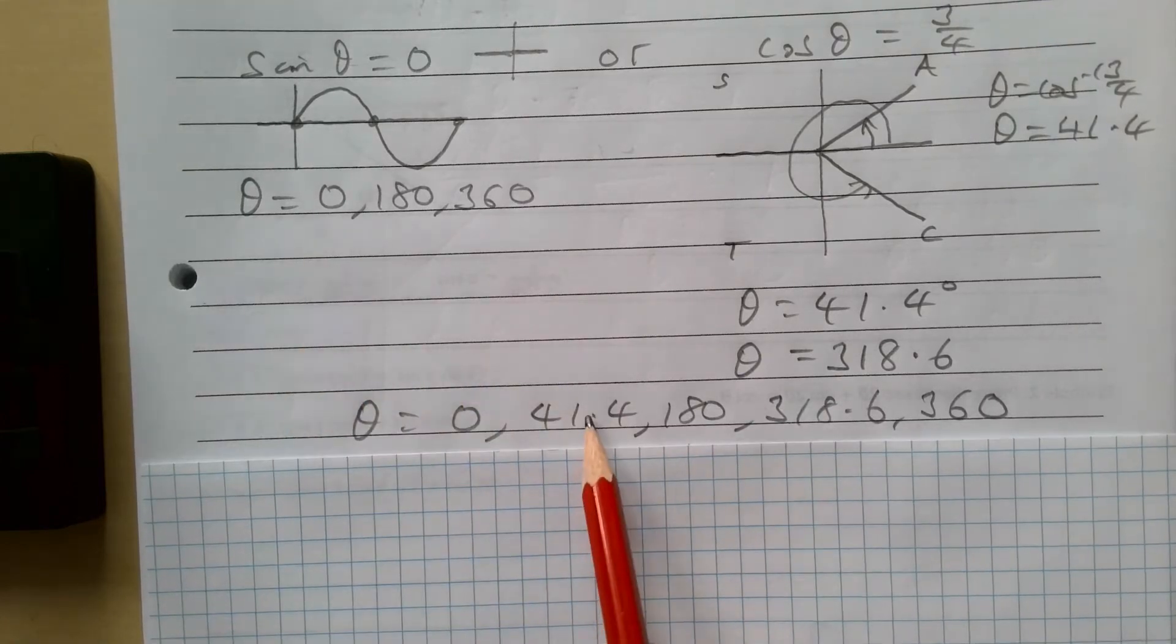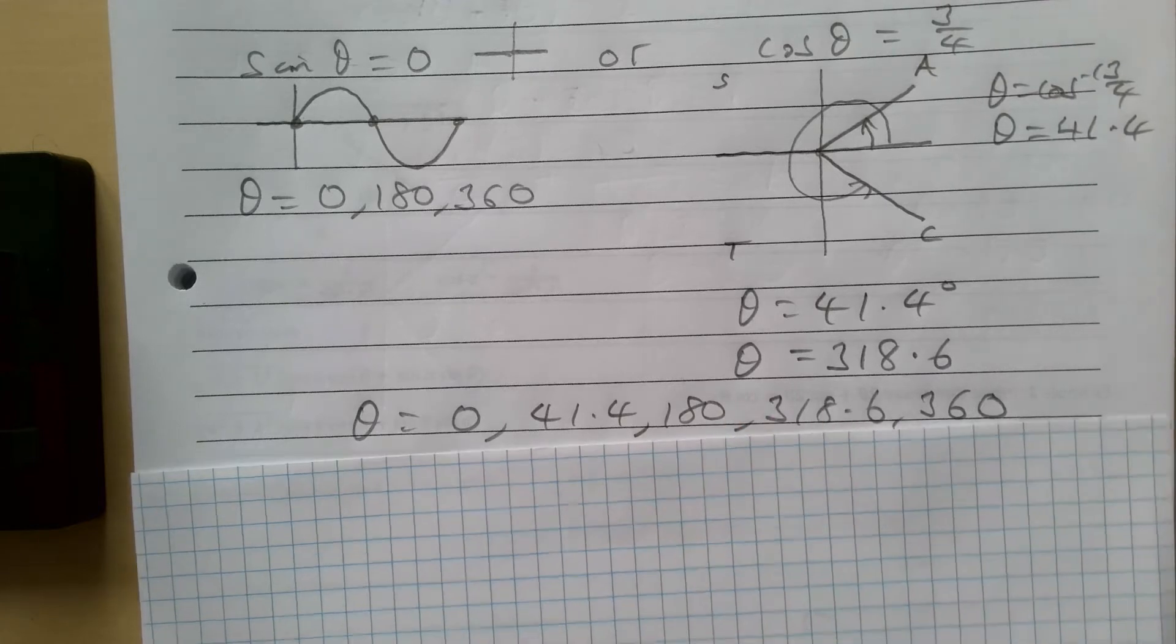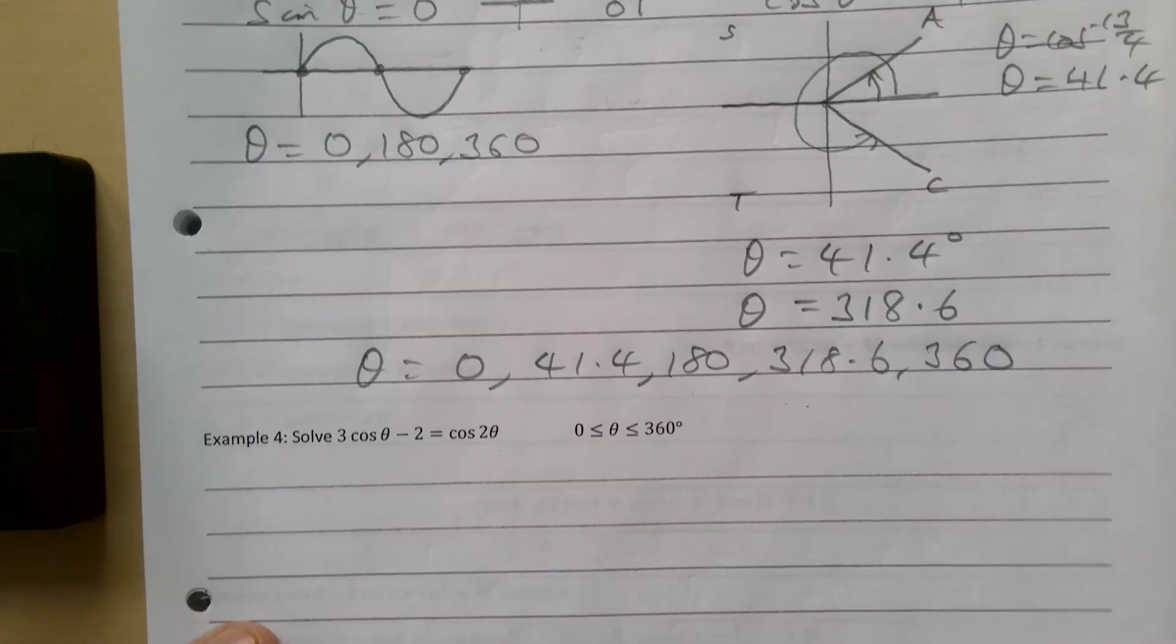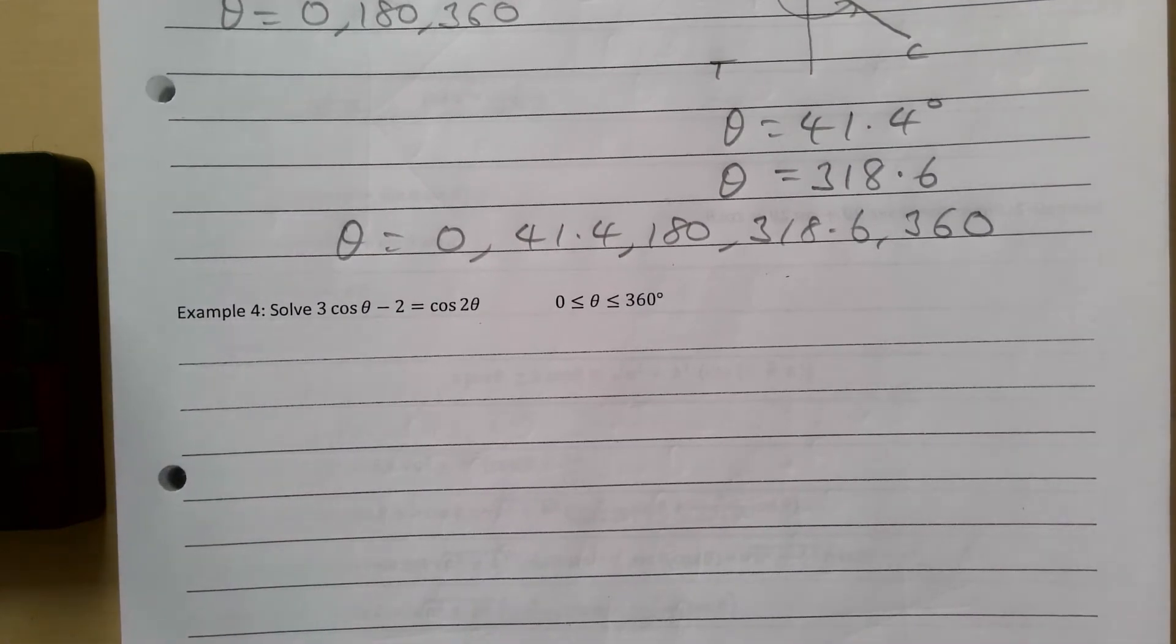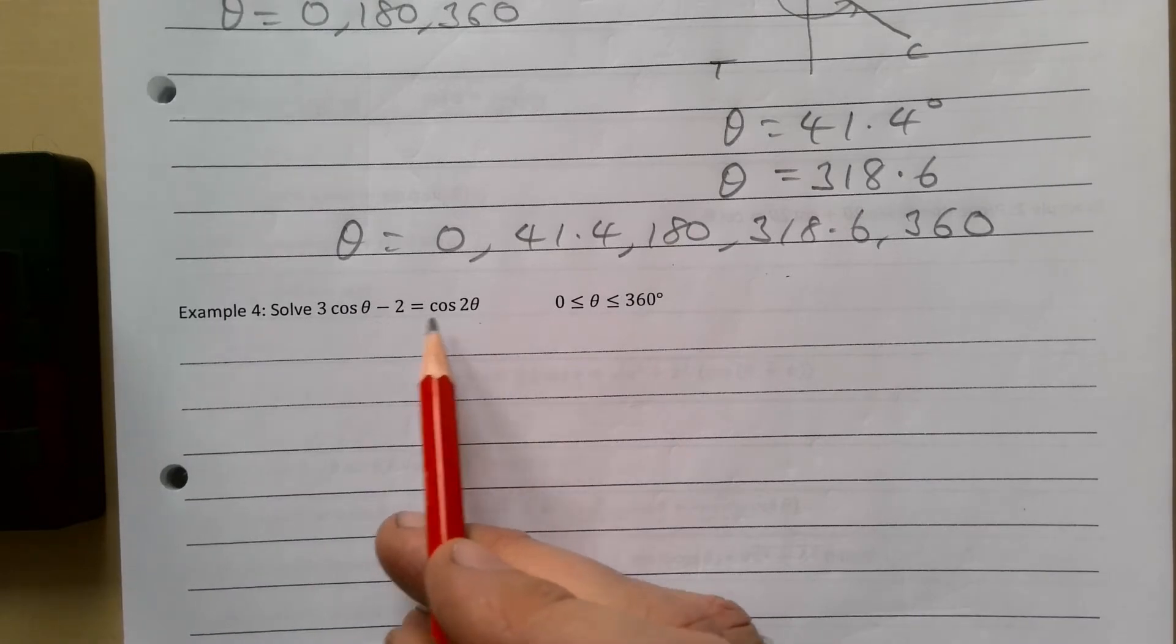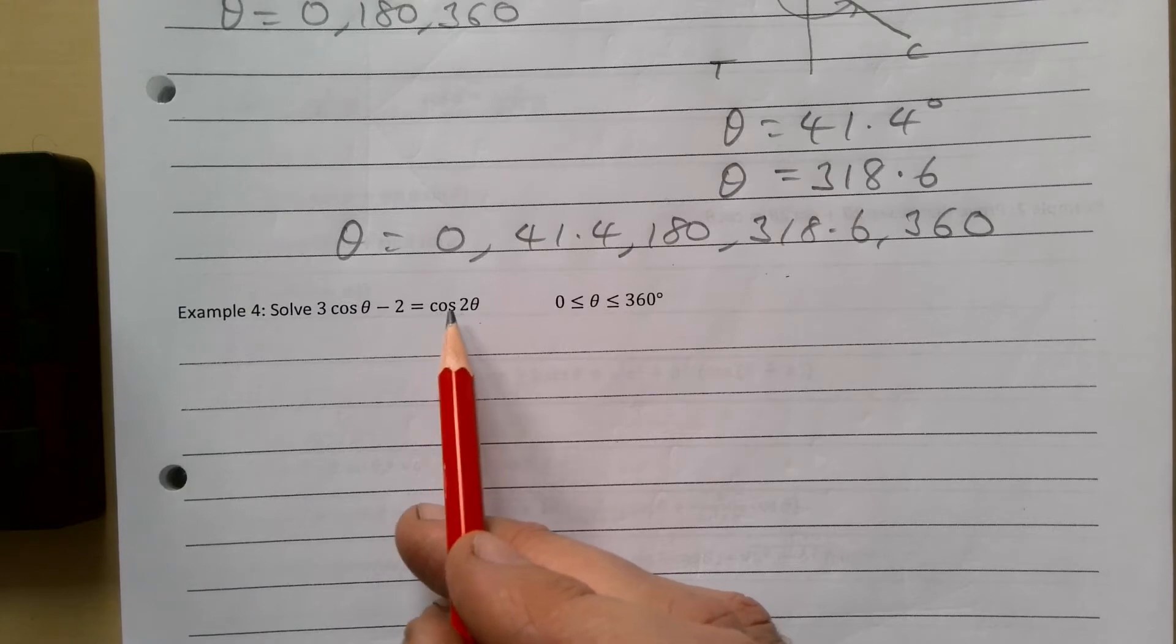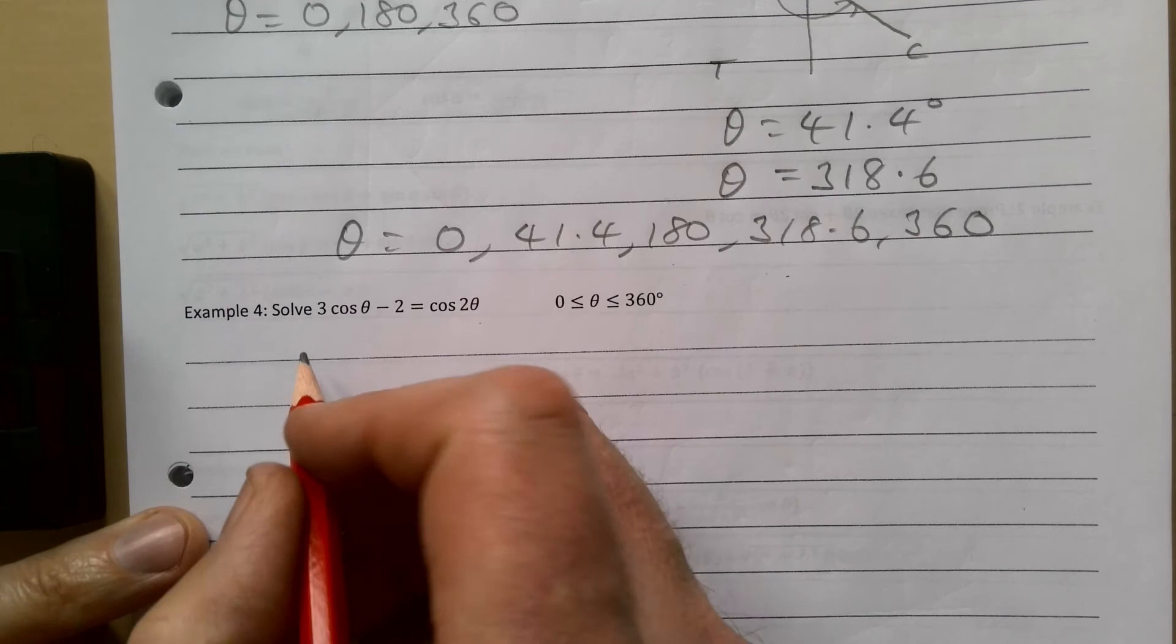Example 2 then: solve 3 cos θ - 2 = cos 2θ. A similar enough one here but obviously we need to be careful because this is a cos 2θ, so we want to change this into a regular theta. So one of our double angle formulas for cos 2θ is 2 cos² θ - 1. So I'm going to rewrite it like that and then we should have a quadratic.